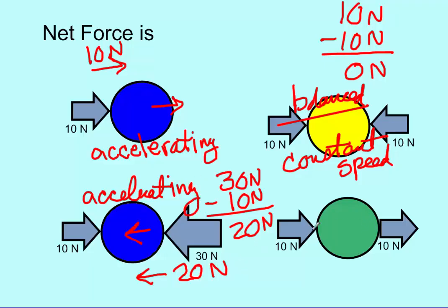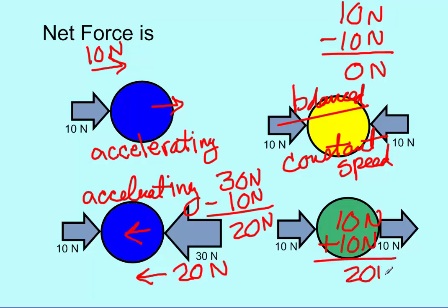Finally, if we look at this one, we have a 10 newton push force on the left and a 10 newton pull force on the right. They are working together — on opposite sides, but working together — so we're going to add those together. 10 newtons plus 10 newtons gives me 20 newtons. This is accelerating because it is an unbalanced force.